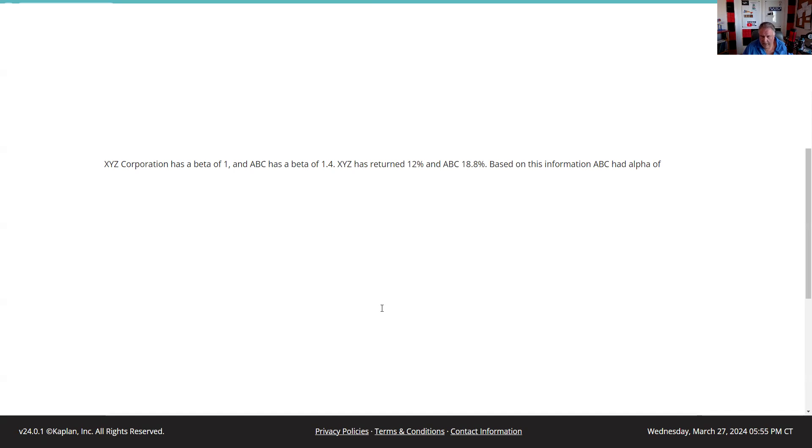For that commercial, Kaplan allows me to give you a free look on Kaplan content like this. Here is the requested explication question. XYZ Corporation has a beta of 1 and ABC has a beta of 1.4. XYZ has returned 12%, ABC 18%.